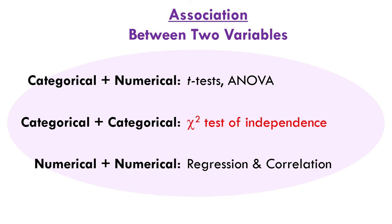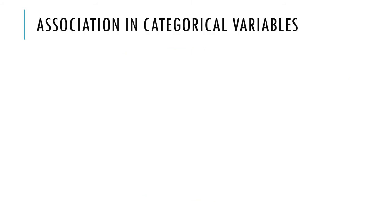When you have a categorical variable and another categorical variable, you have the chi-square test of independence or proportion tests. Proportion tests are categorical and categorical with only two categories each. When there's more than two categories for at least one of those variables, we use the chi-square test of independence. When we have two numerical variables, we do regression and correlation. So we're in chi-square independence territory — testing the association between two categorical variables.